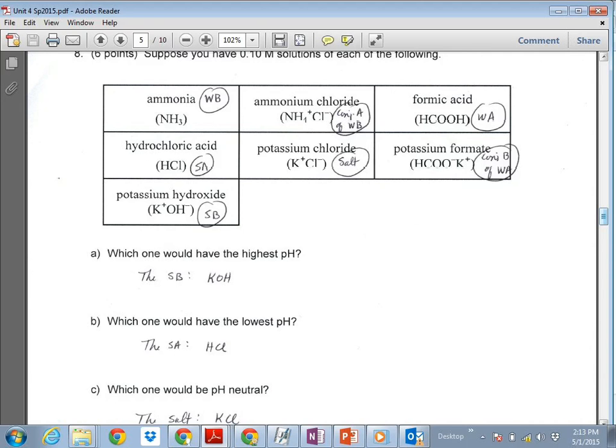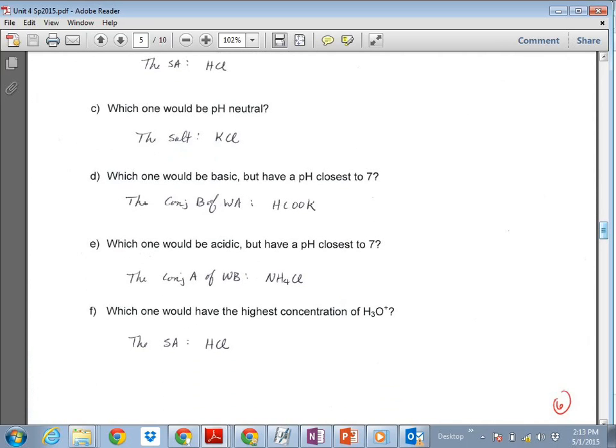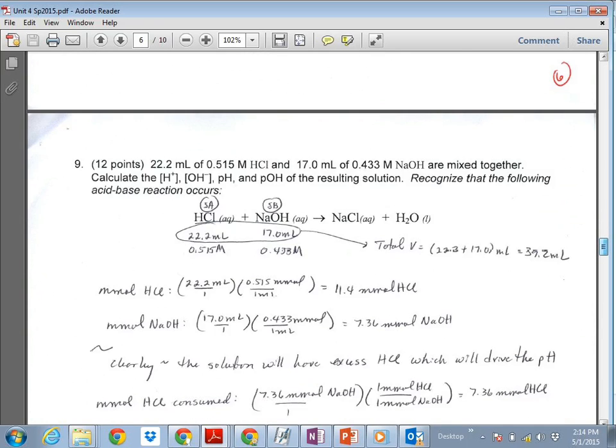So which one would have the highest pH? That would be your strong base, potassium hydroxide. Which would have the lowest pH? That would be your strong acid, HCl. Which one is neutral? That would be your salt, potassium chloride. D, which one would be basic but still close to 7? So that would be your conjugate base of a weak acid. So that is your potassium formate. E, which would be acidic but it would still have a pH pretty close to 7? That would be your conjugate acid of a weak base, and that was your ammonium cation. And F, which one would have the highest concentration of H3O+, that's your hydronium cation. That's the same thing as saying H+. That would be your strong acid, the one that has the lowest pH, F. F is also HCl.